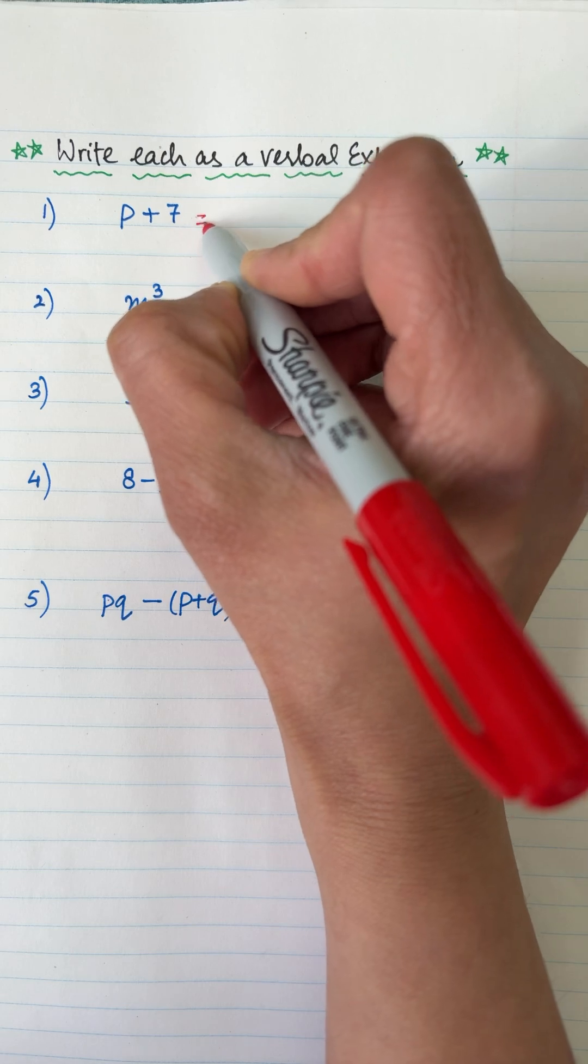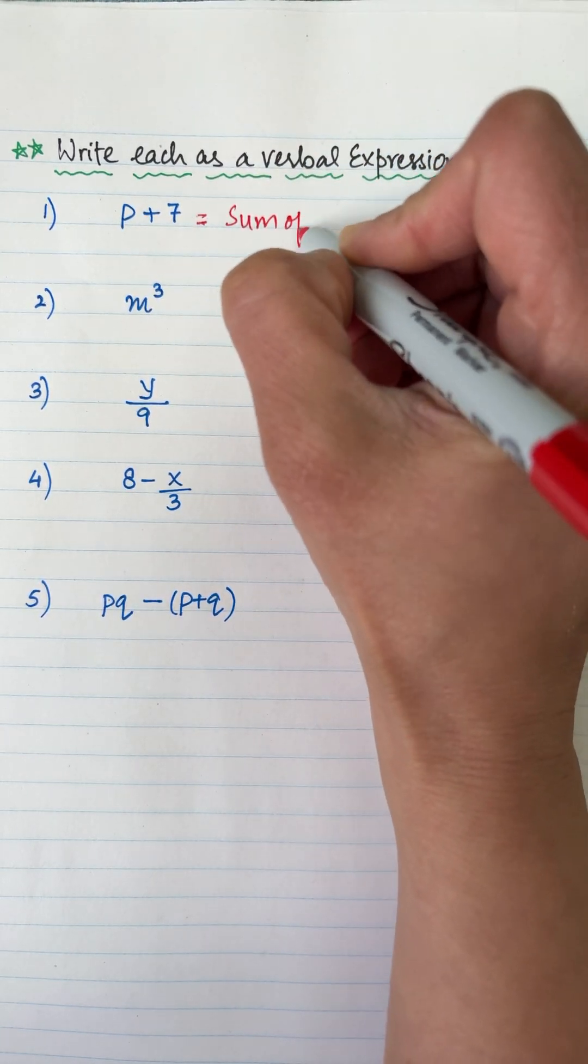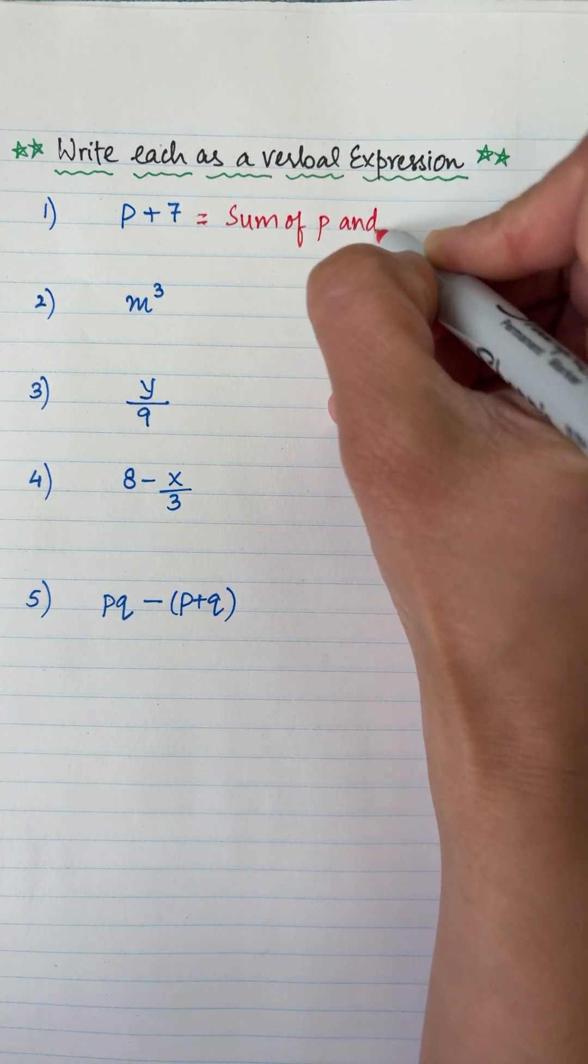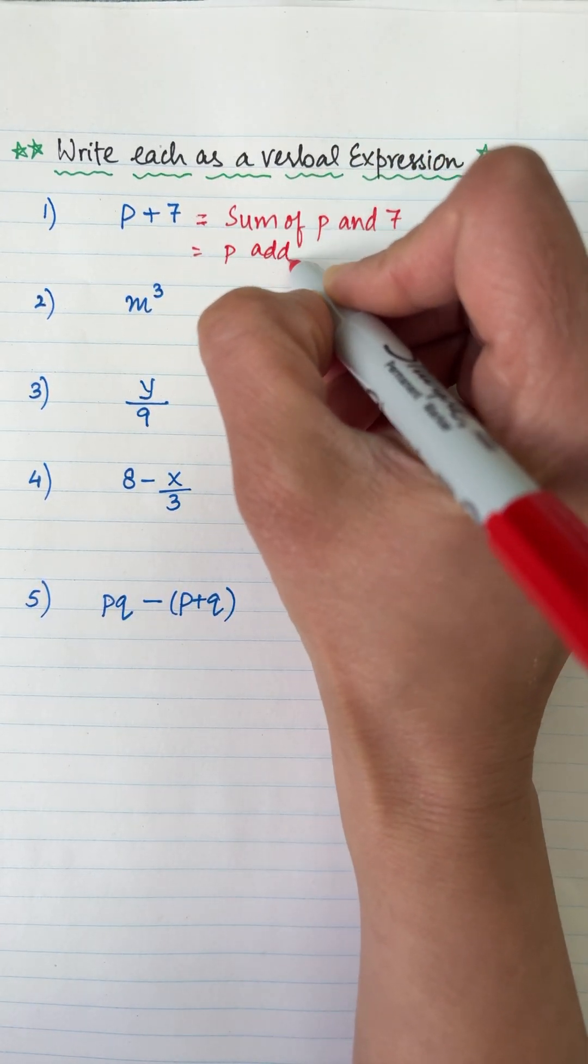So p plus 7, we are finding the sum. Sum of p and 7. If somebody writes p added to 7, that is also correct.